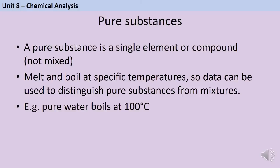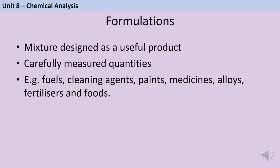Unit 8 is chemical analysis. A pure substance in chemistry is a single element or compound not mixed with anything else — different from everyday use (e.g. 'pure orange juice' is still a mixture). Pure substances melt and boil at specific temperatures; if water boils at a temperature other than 100°C, it is not pure. Formulations are carefully designed mixtures used as useful products, with precisely measured ingredients. Examples include fuels, cleaning agents, paints, medicines, alloys, fertilisers and foods.